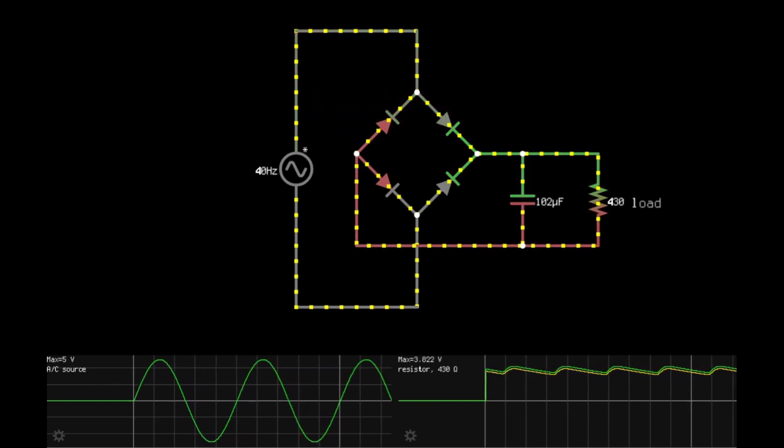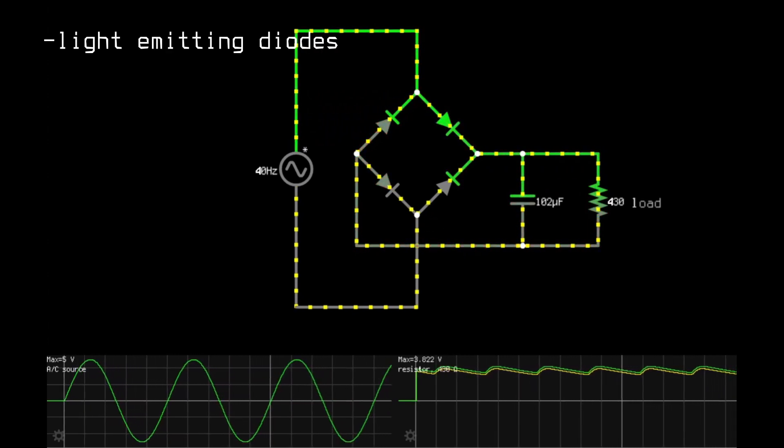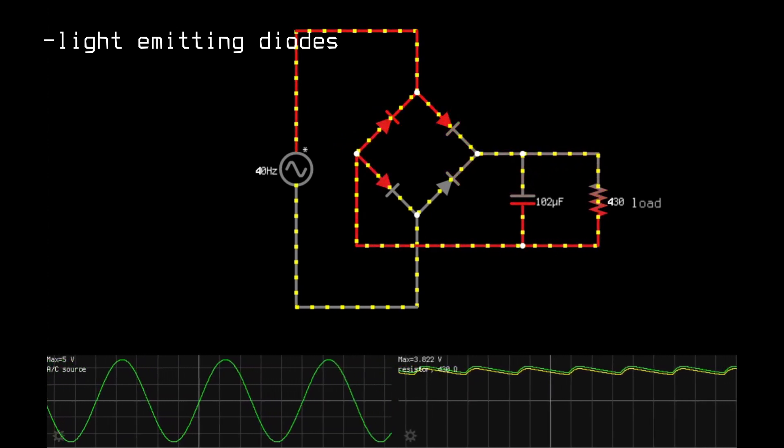The most common variants of diodes are light emitting diodes. They emit light when current flows through them.